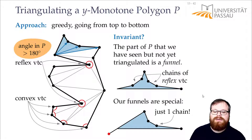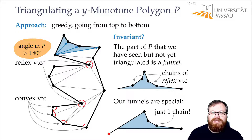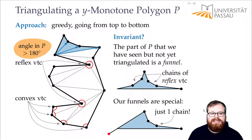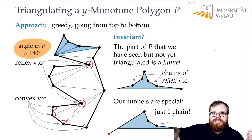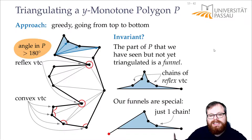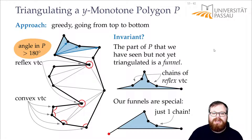We have very special funnels — those that have only one chain of reflex vertices. On the other side, it's just one edge or part of one edge. And if we encounter this, it's very easy: when we get to the next vertex, we can just connect it to all these reflex vertices. So basically, we walk from the top, collect reflex vertices on one side, until we either get a vertex from the other side or we get to a convex vertex, and then we connect it to all the reachable reflex vertices found so far.